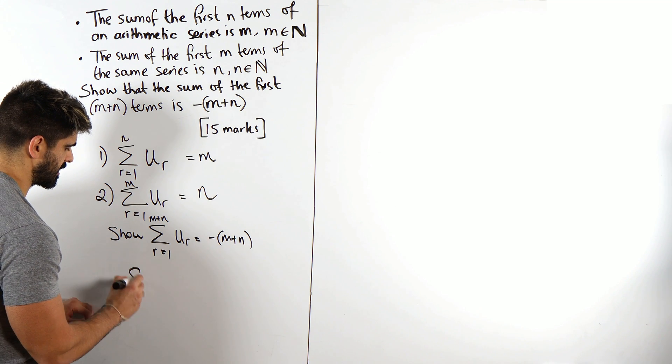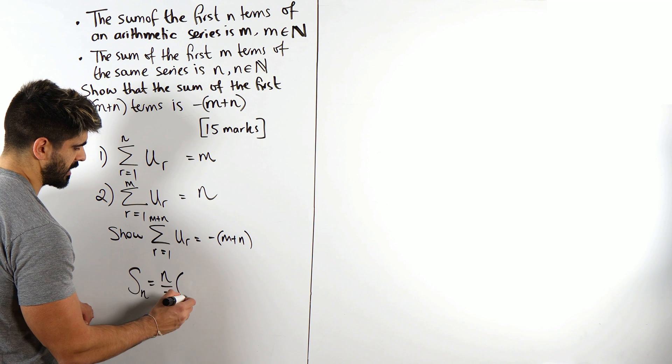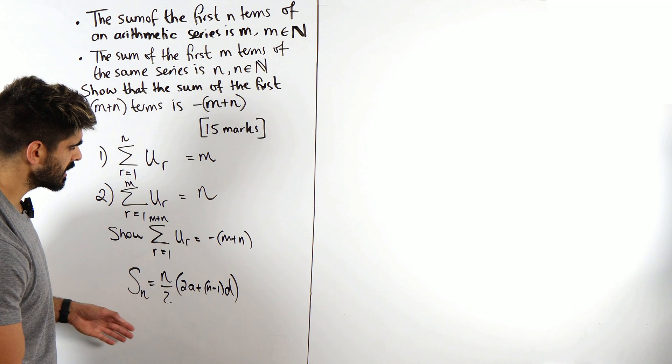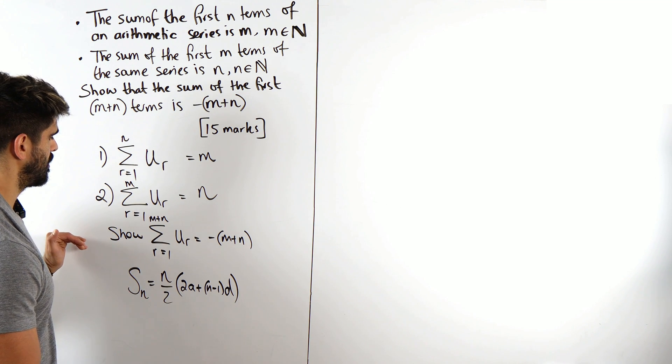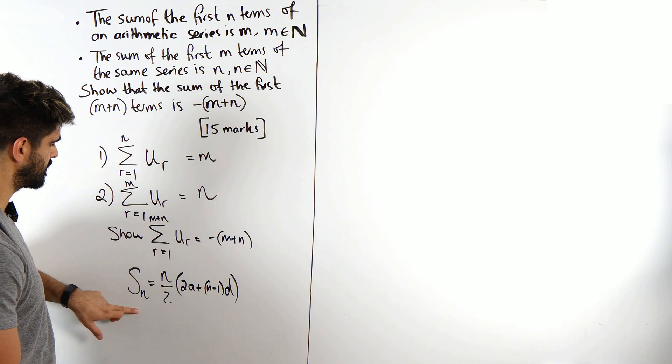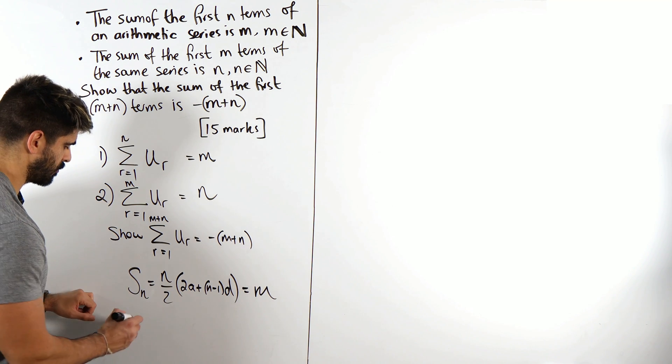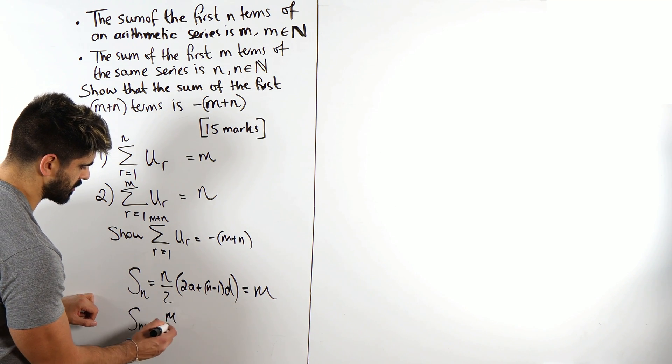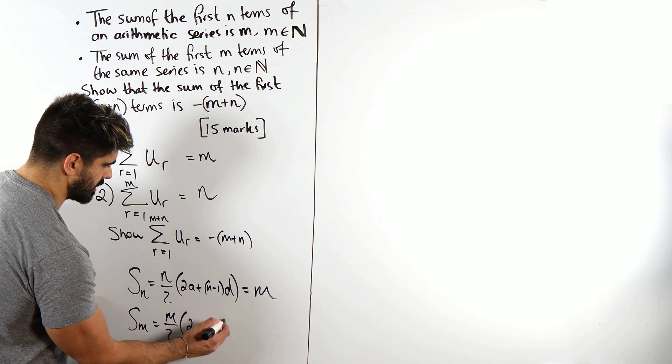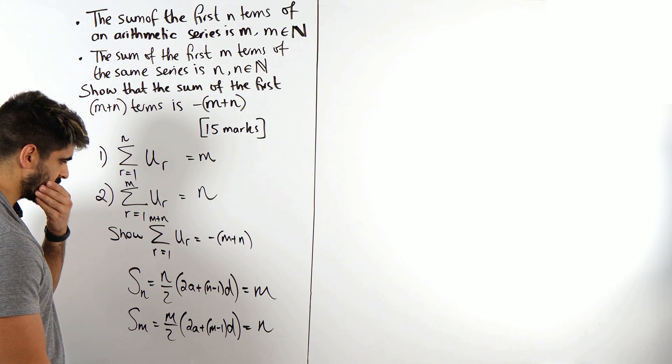We're not even adding these together, it's the negative of those two. Interesting. I guess if we want to do this then, we need to find the first term and we need to find the common difference. Now for an arithmetic sequence, the sum of n terms is n over 2 times 2a plus n minus 1 times d. And we're going to have to write this statement for both of these. We actually know this one, this one's m.